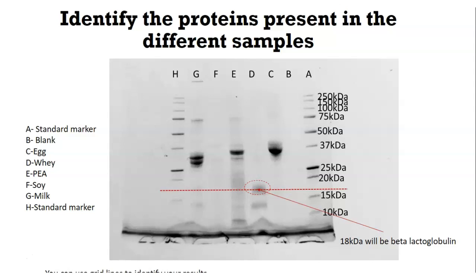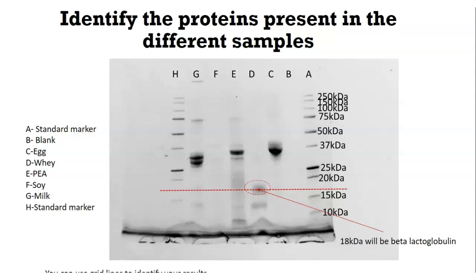Alpha-lactalbumin has a molecular weight distribution of about 14 kilodaltons. In our gel, we can see a clear band, and using the grid line to guide us, we can see it falls between 20 and 15 kilodaltons — so we can say with confidence that it's close to about 18 kilodaltons, which would be beta-lactoglobulin. And slightly below, there is a band appearing between 10 and 15 kilodaltons, which is most likely alpha-lactalbumin at about 14 kilodaltons — so that band corresponds to the alpha-lactalbumin component of the whey protein.